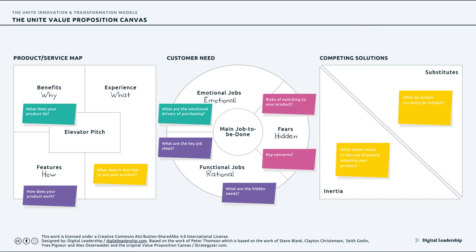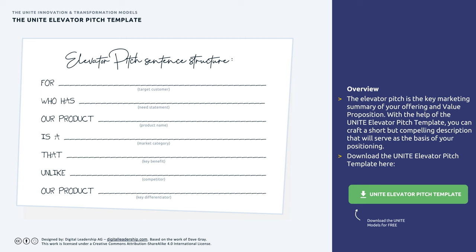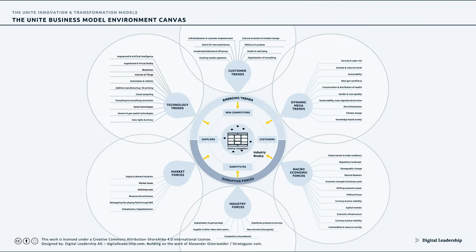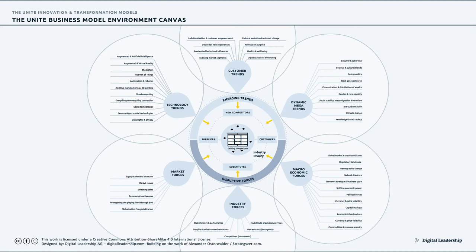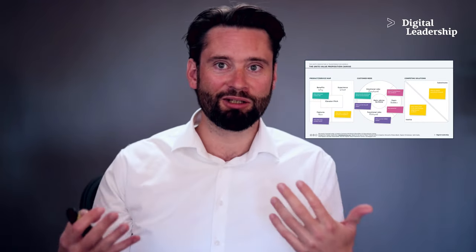But even from here you can zoom in further — for example, you could zoom in to the elevator pitch. Zooming out from the business model canvas, here is the business model environment canvas. Business models don't live in a vacuum; they live in a competitive context. Here you can break down the competitive context by emerging trends and disruptive forces to analyze your business environment. That journey takes you from business model to elevator pitch to value proposition to environment canvas.